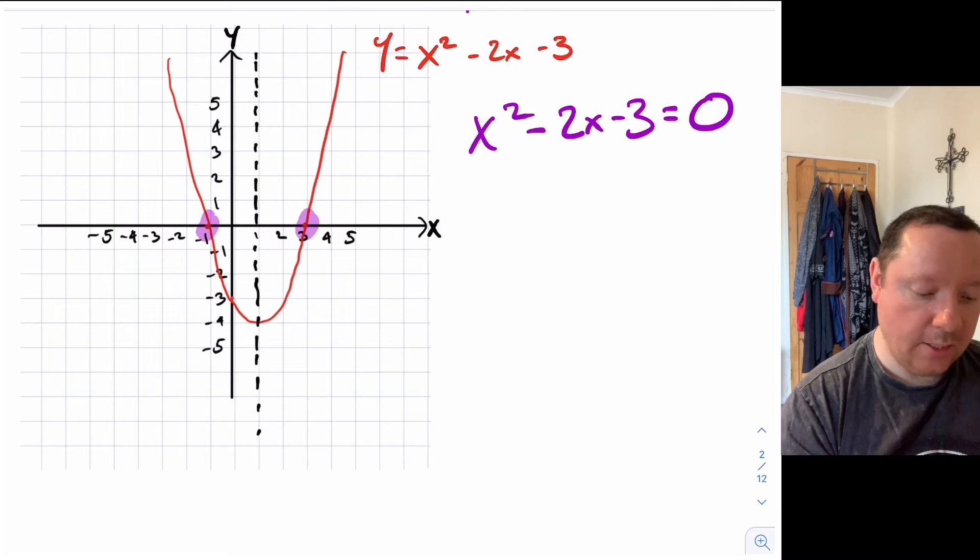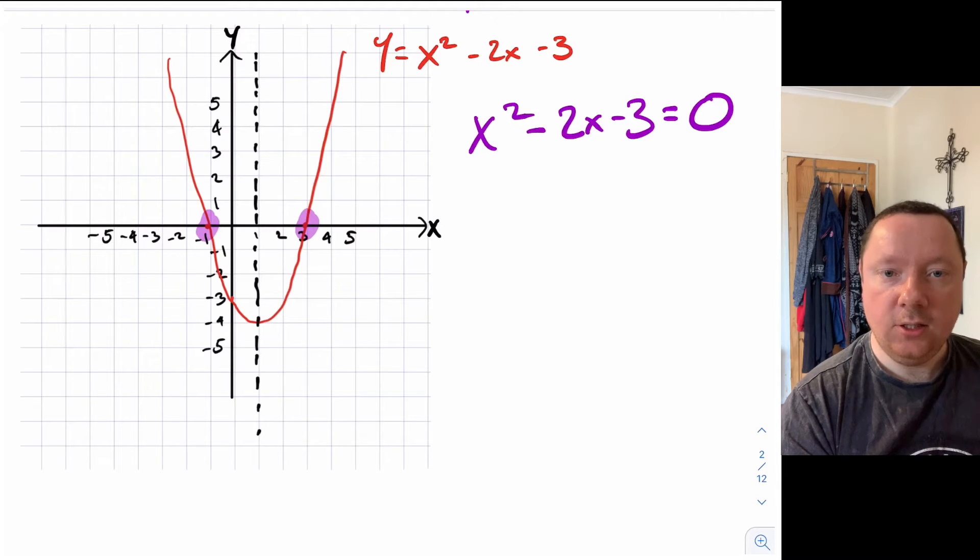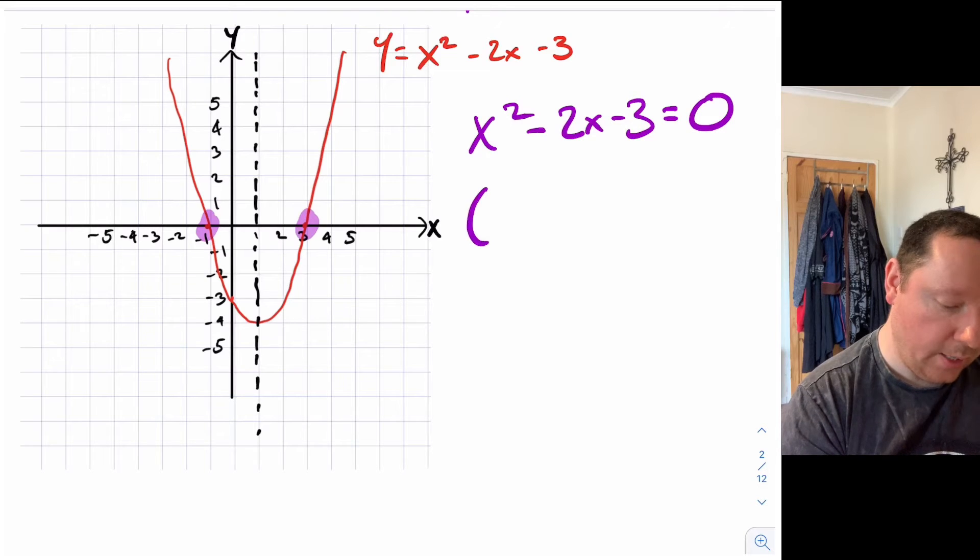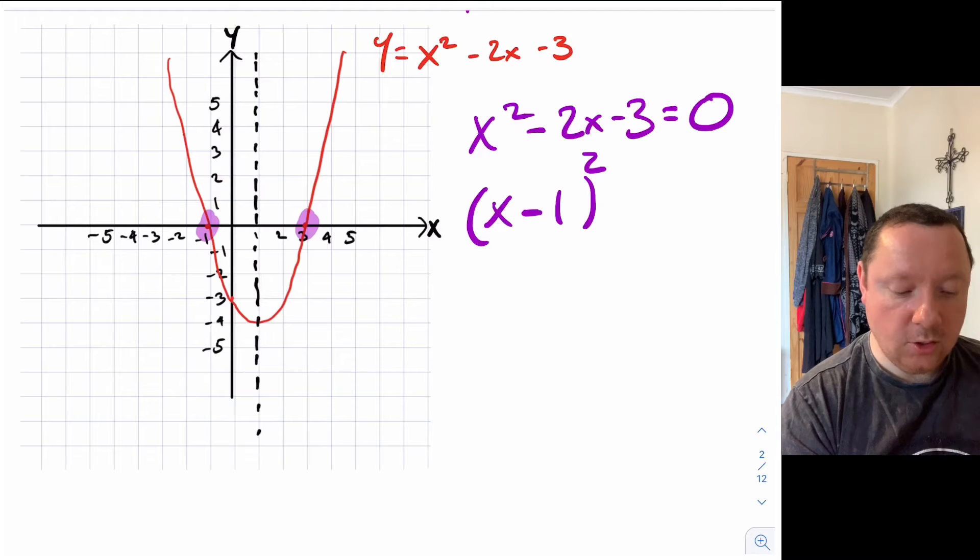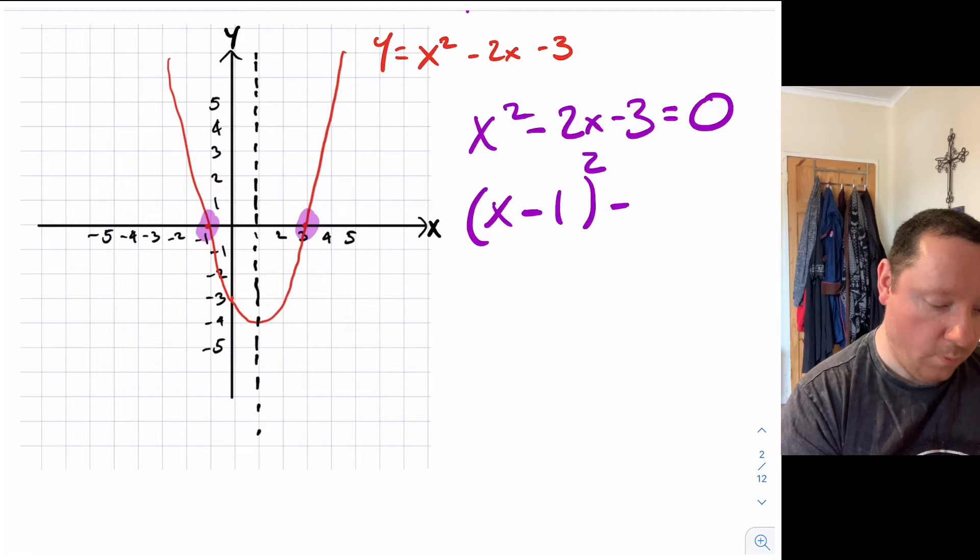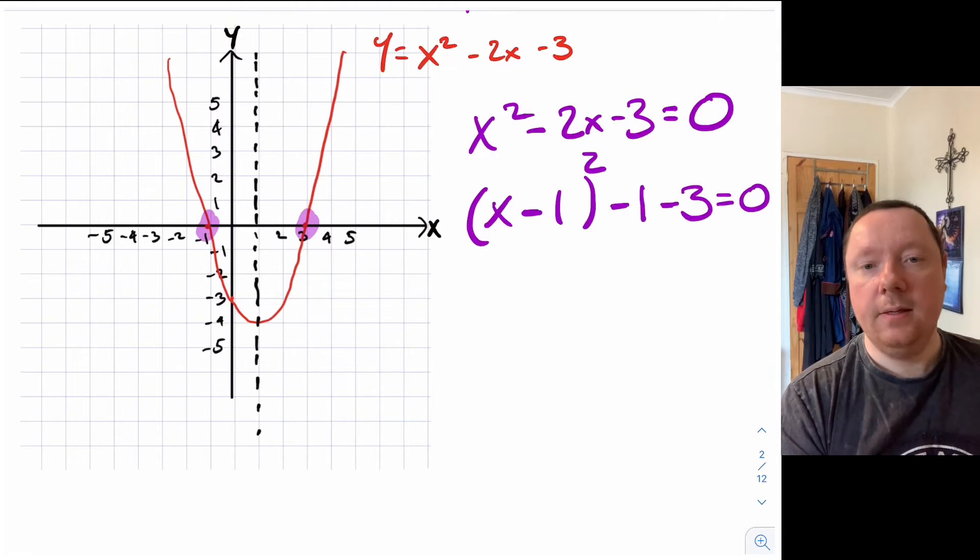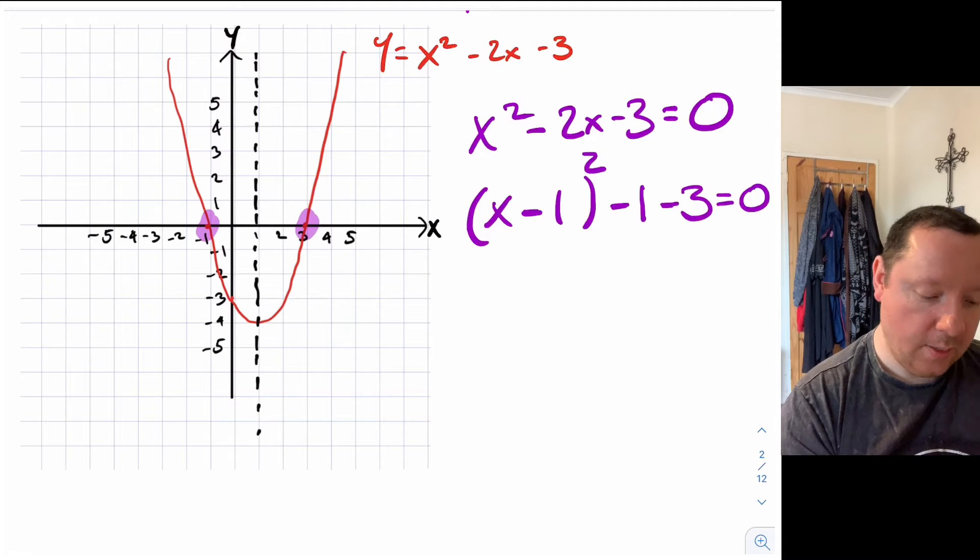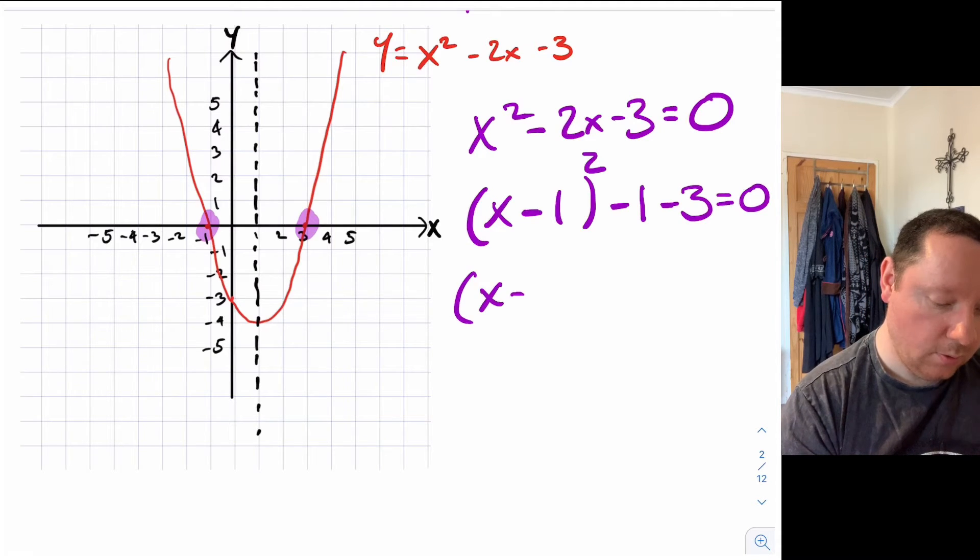So we'll do x squared minus 2x minus 3. Just from previously, remember to complete the square I open a bracket x minus 1 because I've just halved the 2 to get 1 squared. I immediately do 1 squared which is 1 and take it away because I'm now over by 1 and I take away the 3 as well which is still there. But this time this will still equals 0.